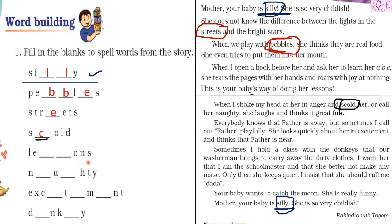Next is a word that starts with 'l', ends with 's', has 'o', 'n', 's' at the end, and 'l', 'e' at the beginning — L-E-S-S-O-N-S — which makes 'lessons'. Can you find this word in the story? Yes, it appears when the boy is asking his little sister to learn A, B, C.